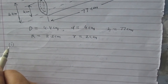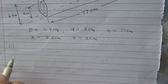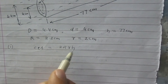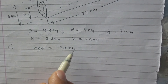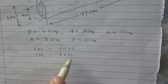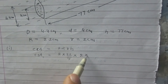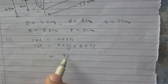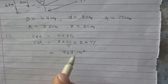In part 1, we are supposed to find the inner curved surface area. The curved surface area of a cylinder is 2πrh, where r stands for the radius and h stands for the height of the cylinder. So the inner curved surface area is 2 × (22/7) × 2 × 77. After calculation, you will find that it is 968 cm², which is the inner curved surface area of this pipe.